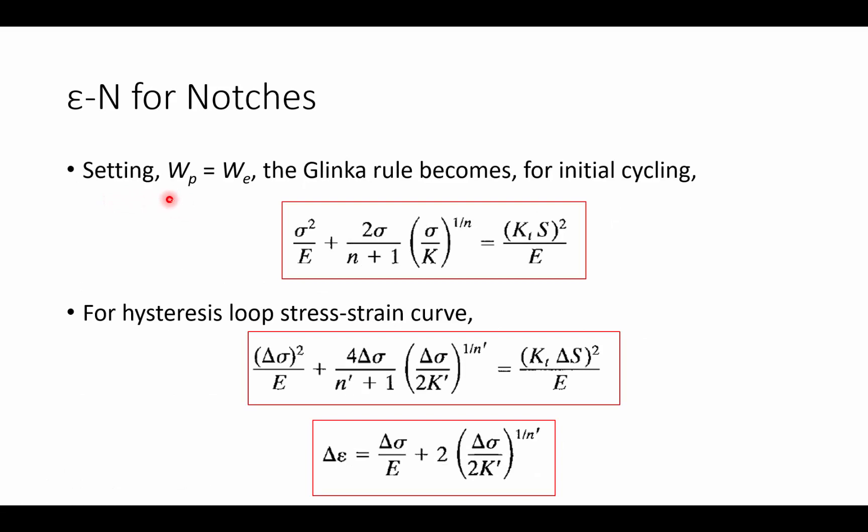If we were to set the plastic and elastic portions together, then Glinka's rule becomes the following, where we have the Ramberg-Osgood type relationship on the left-hand side, and then we have a kind of constraint equation, very similar to what we had with Neuber's rule on the right-hand side. This is the equation here for monotonic loading because we have just K and n, and this here is the equation that we have for fatigue hysteresis loops, for creating the loops themselves where we have a K' and an n'.